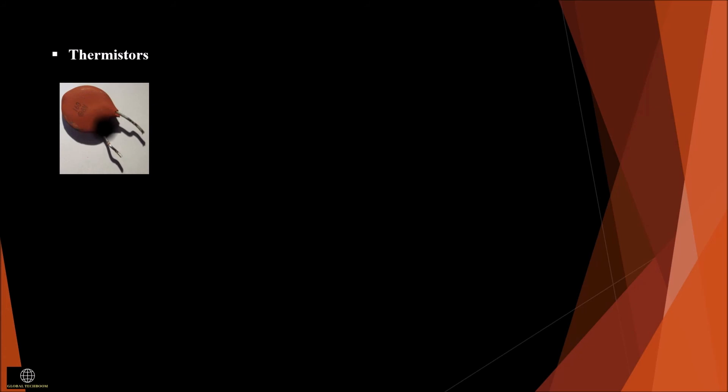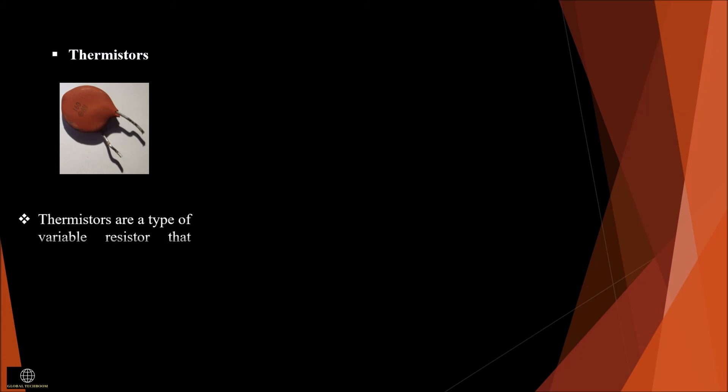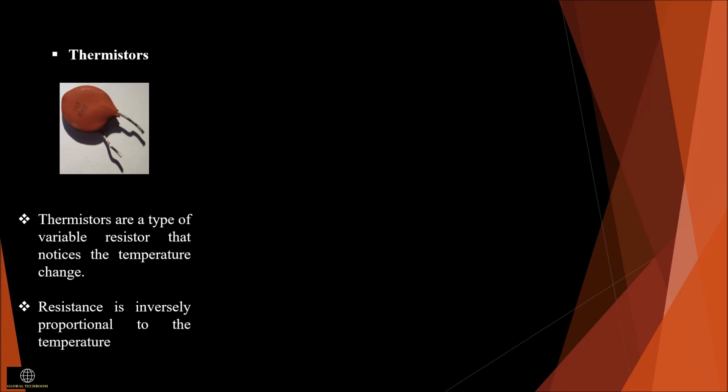A thermistor is a two-terminal device that is very sensitive to temperature. The resistance is inversely proportional to the temperature. The resistance increases when the temperature decreases and vice versa. Negative temperature coefficient means the resistance decreases with temperature rise, while positive temperature coefficient means resistance increases with temperature rise.